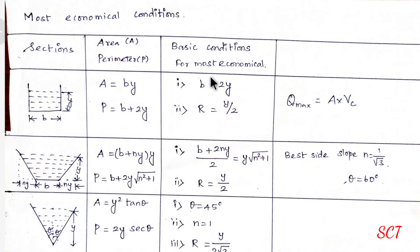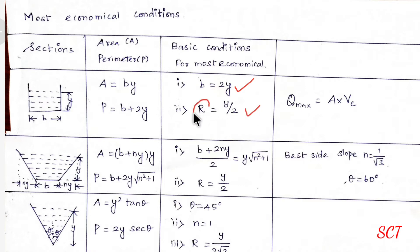This is the most economical condition — we will derive the values. B equal to 2y. R equal to y by 2. R is the hydraulic mean radius, also called hydraulic mean depth. The breadth equals the top width.